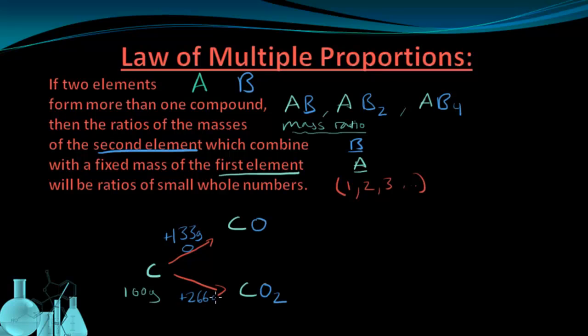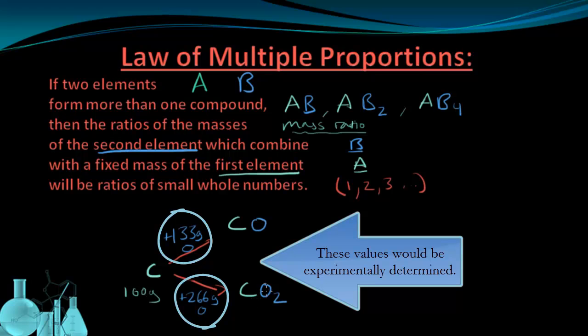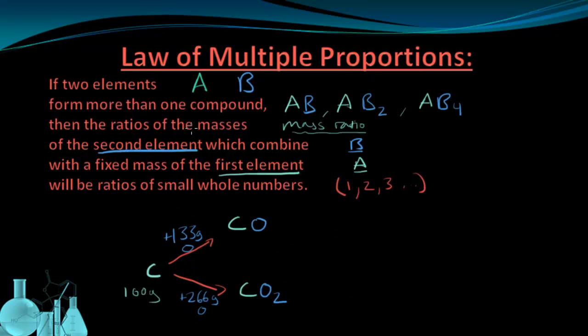And we would see that it takes 266 grams of oxygen to combine with that 100 grams of carbon to form carbon dioxide. So now we know the masses of the second element which combine with a fixed mass, the 100 grams of the first element.